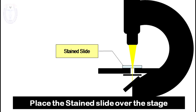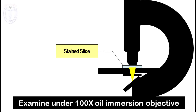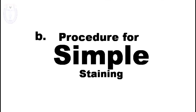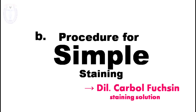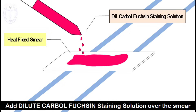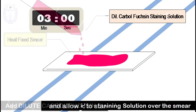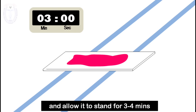Place the stained slide over the stage and examine the slide under 100x oil immersion objective microscopy. The procedure for simple staining can also be done using dilute carbol fuchsin staining solution. The only change is to add dilute carbol fuchsin staining solution over the fixed smear and allow it to stand for three to four minutes.